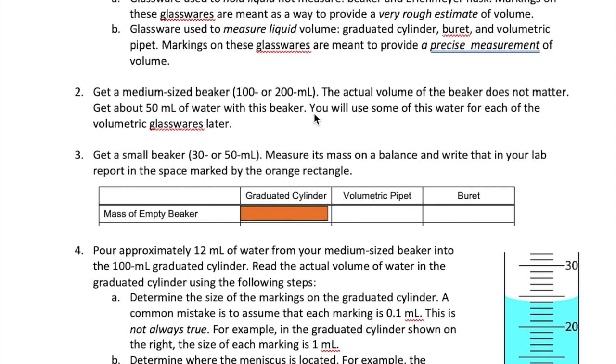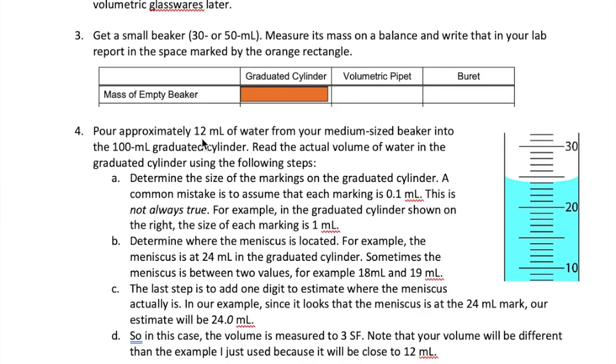Take the medium sized beaker that has that 50 milliliter of water and just pour approximately 12 milliliter into a 100 milliliter graduated cylinder. To figure out exactly how much volume you have, you're going to read it from the graduated cylinder and you're going to follow the steps below. First, you're going to have to determine the size of the markings on the graduated cylinder. Now very often when I ask students to do this, the answer I get is always that the marking is 0.1 milliliter. This is not always true.